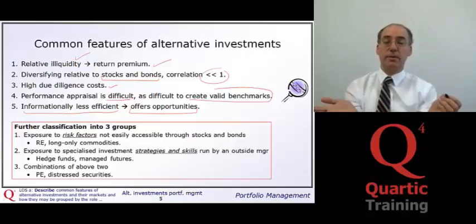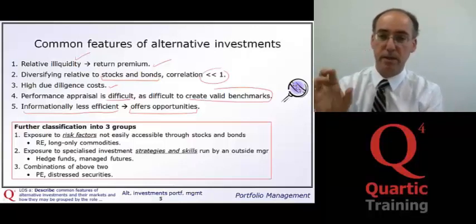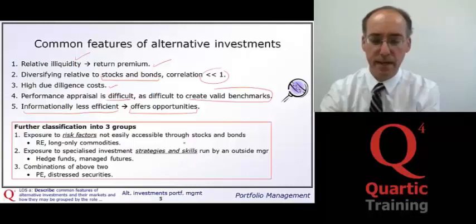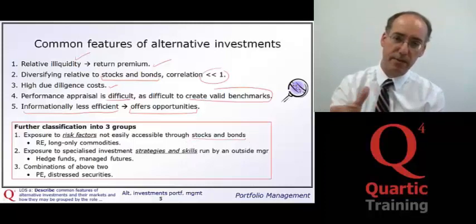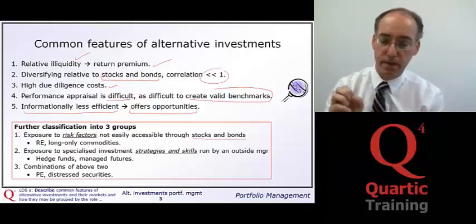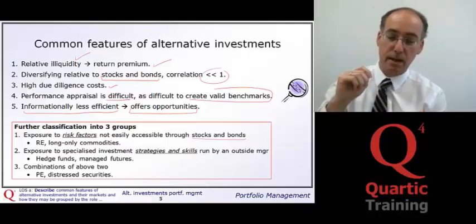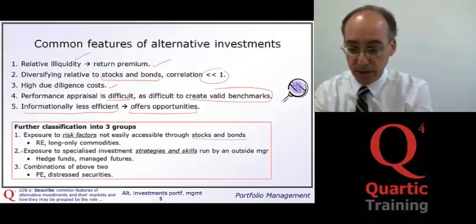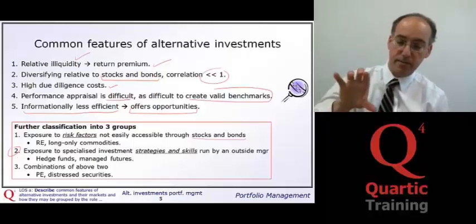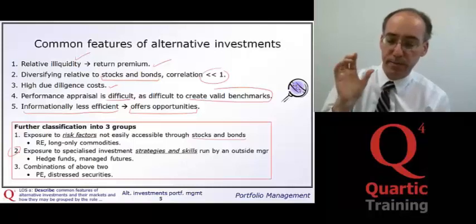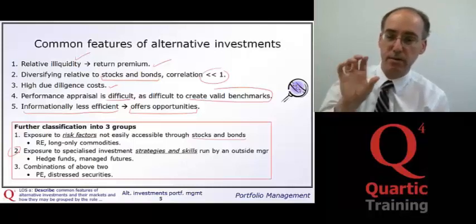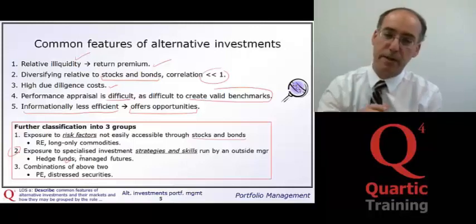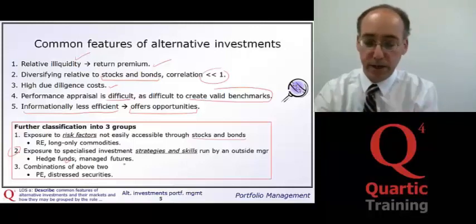Alternative investments can be classified into different groups. The first group provides exposure to particular risk factors that are not easily available through stocks and bonds — examples are real estate or long positions in commodities. The second group provides exposure to specialized investment strategies and the specialized skills of investment managers, as found in hedge funds and managed futures.